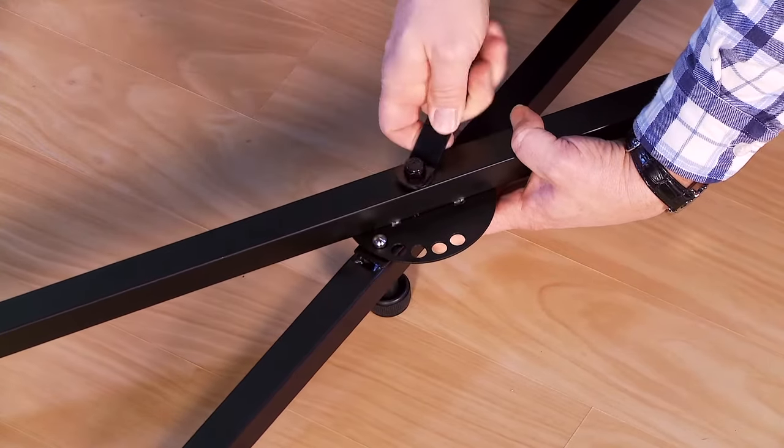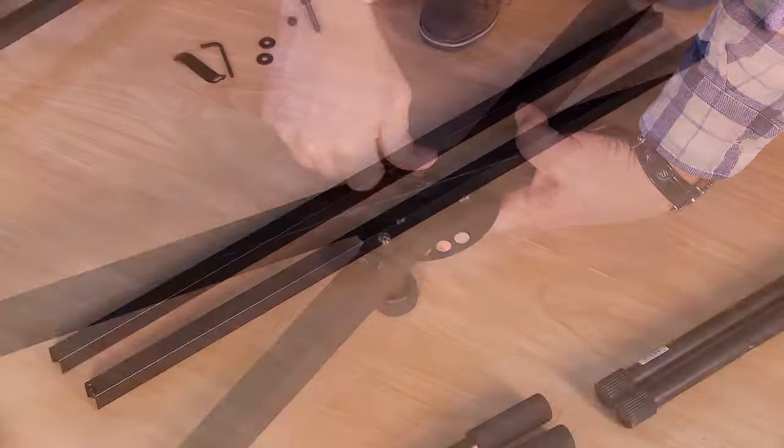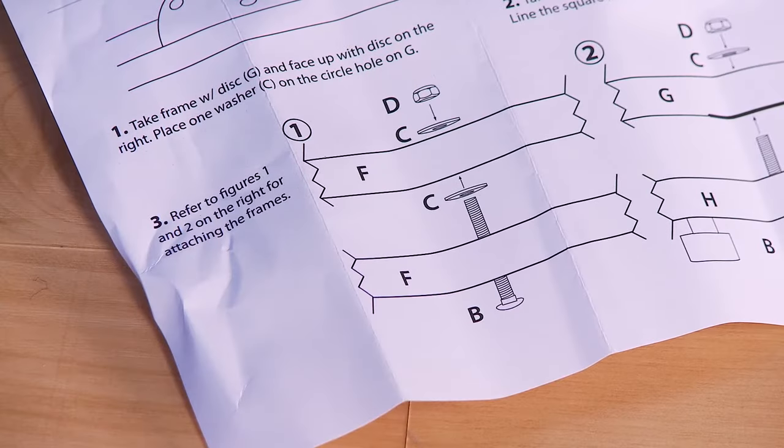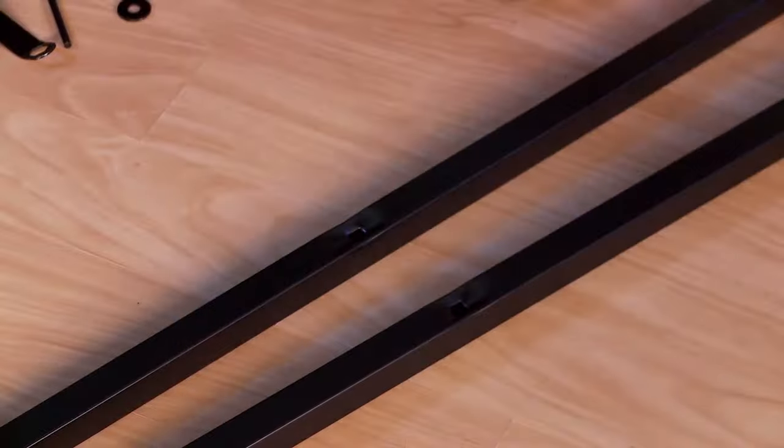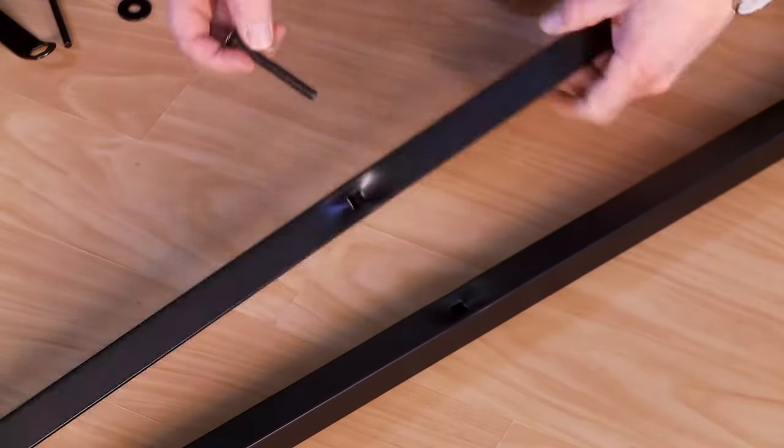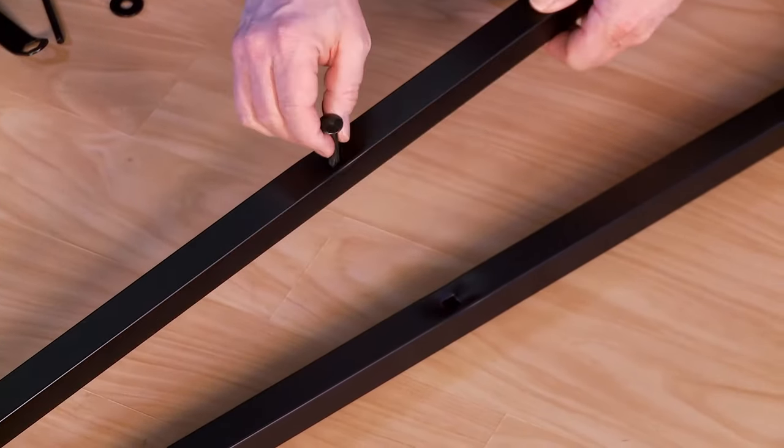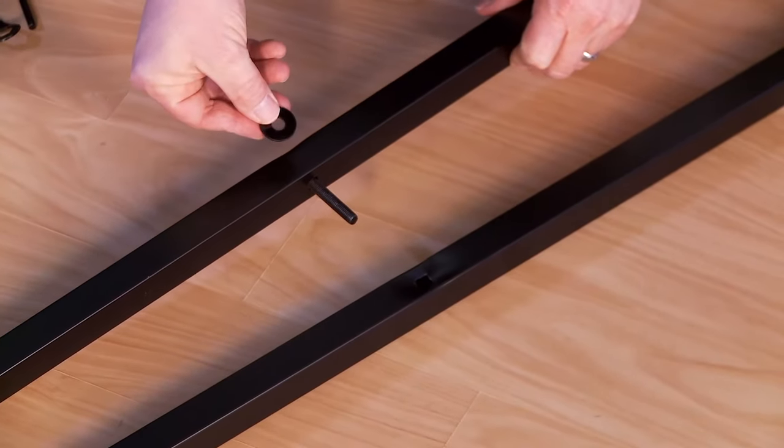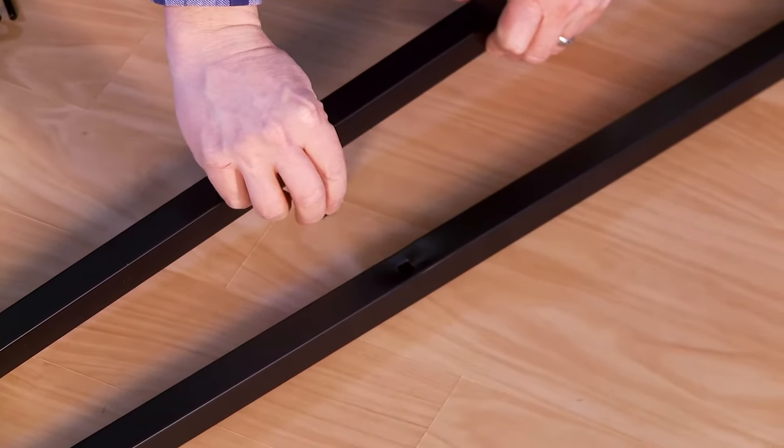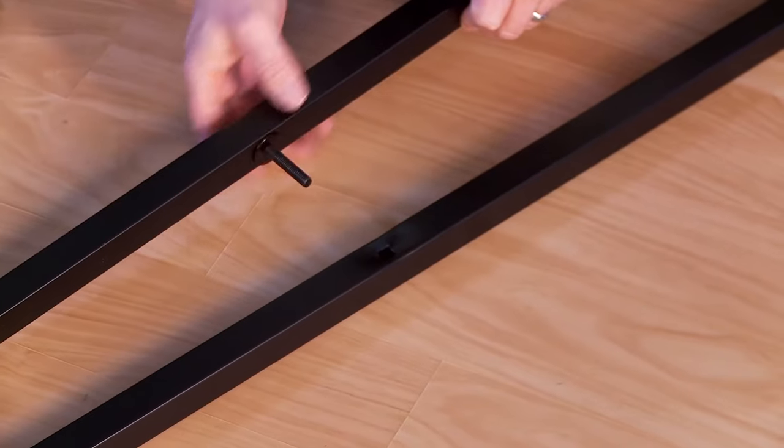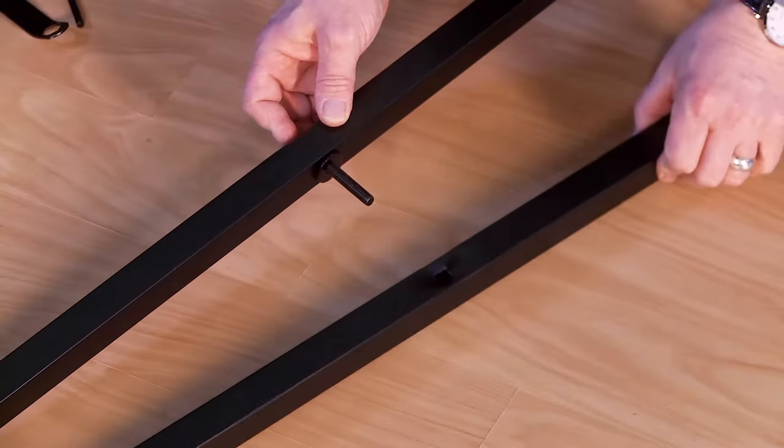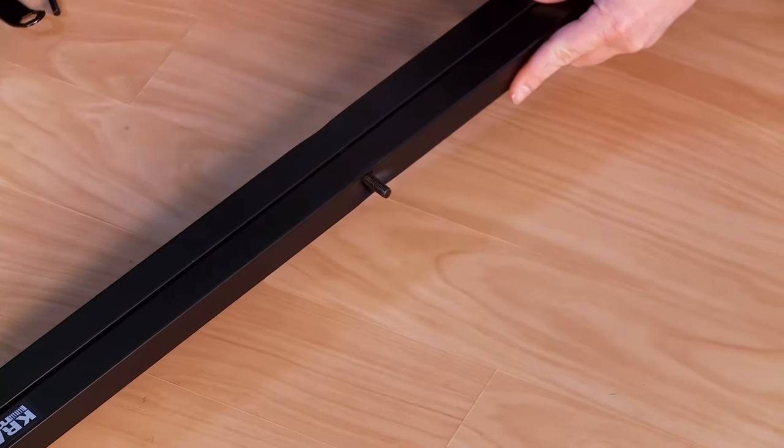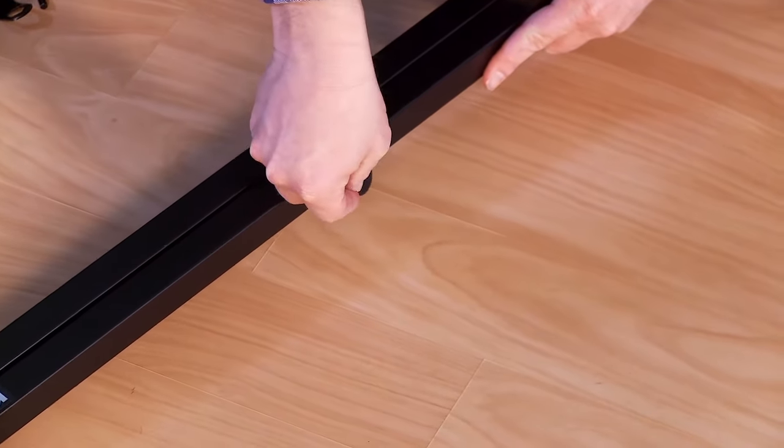Secure the nut using the provided hex wrench. Connect the two remaining frame pieces with a bolt. Use a washer in between the two frames and a washer and a nut on the outside.